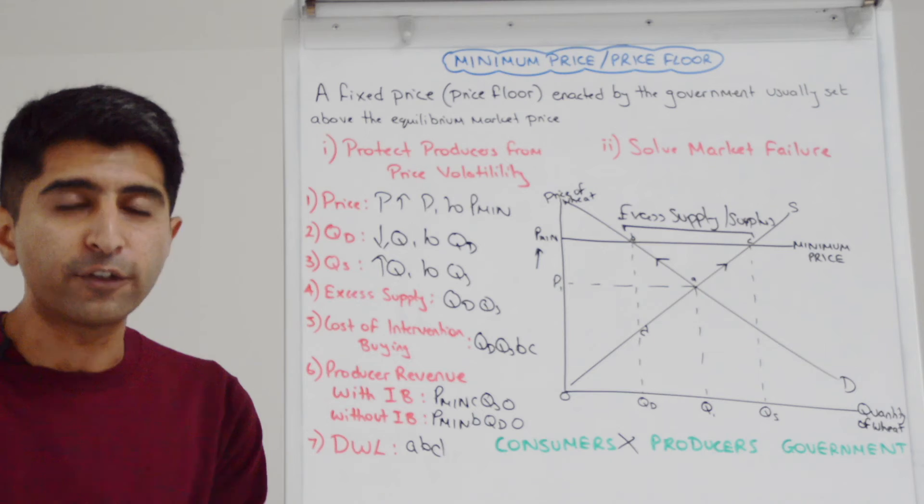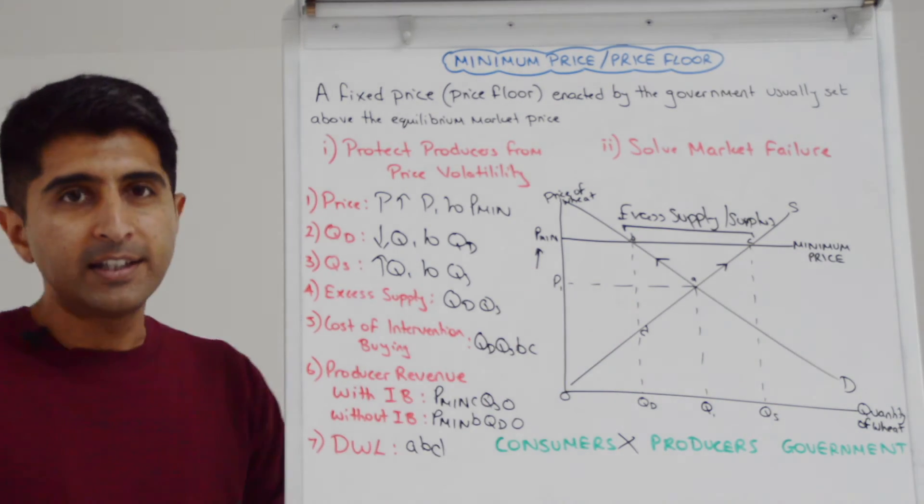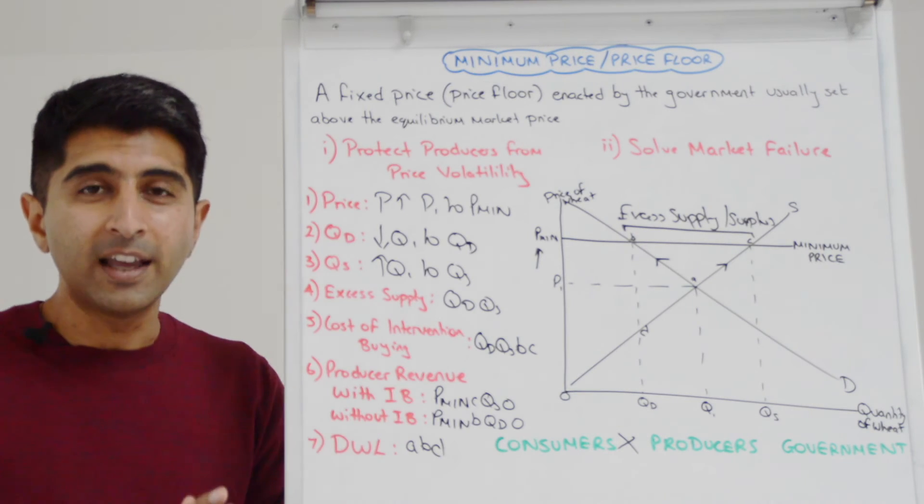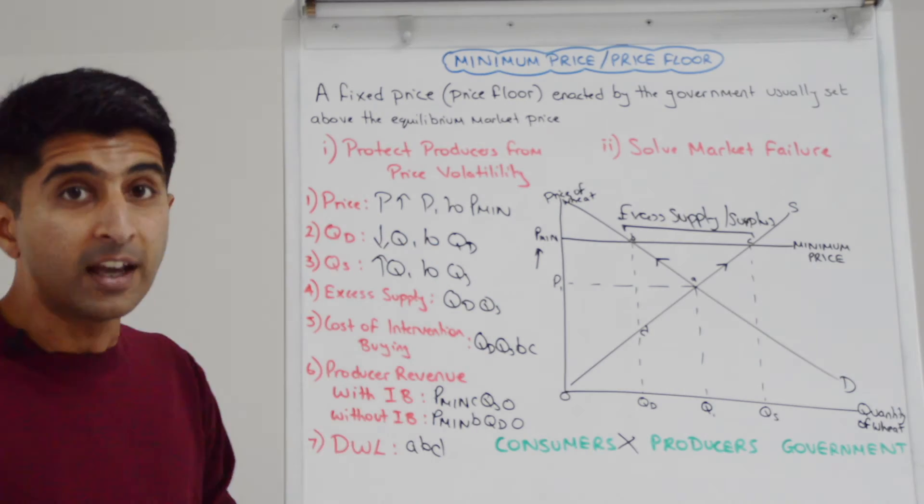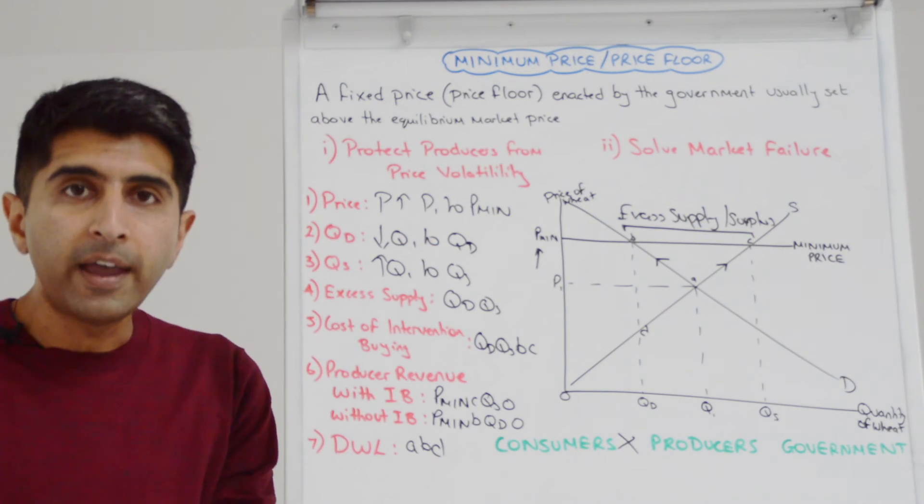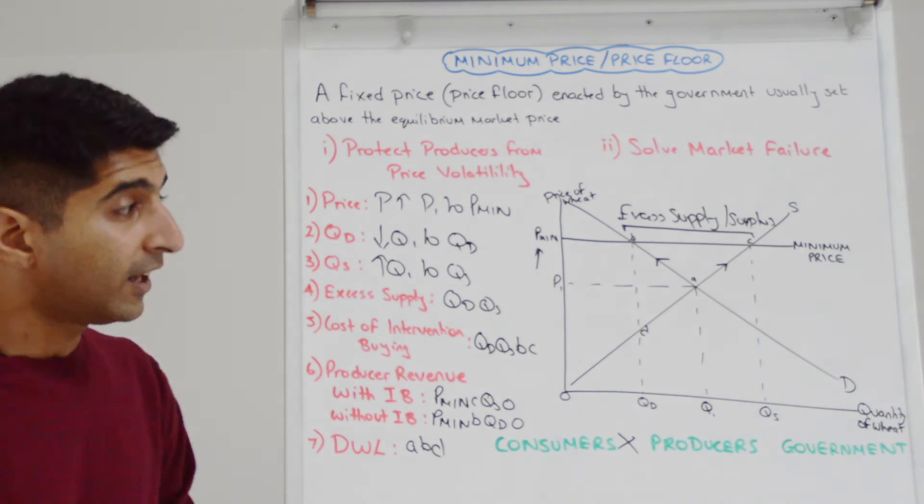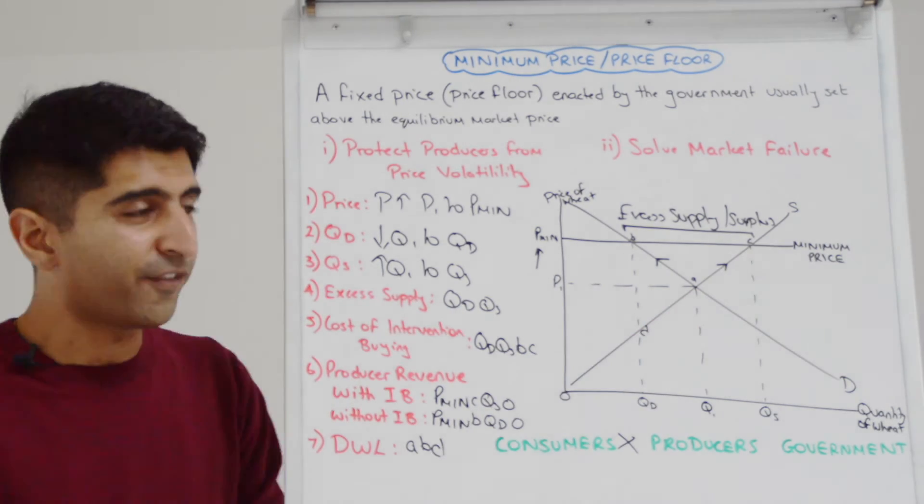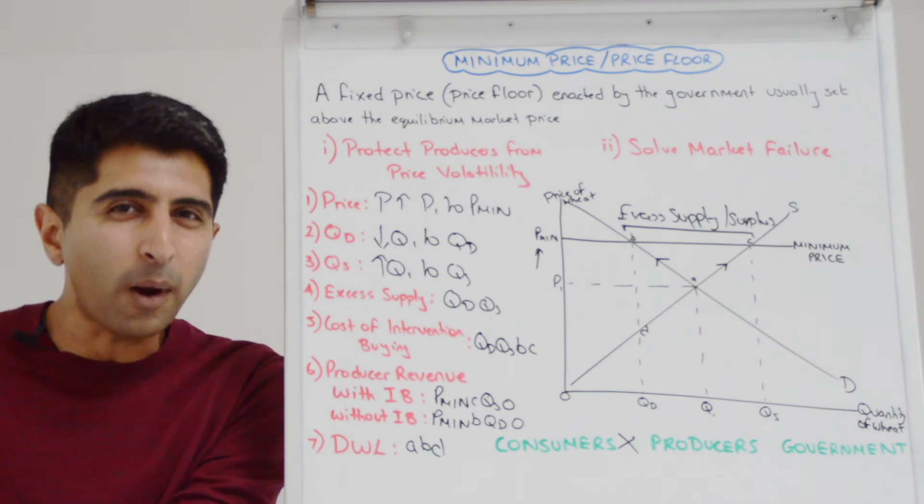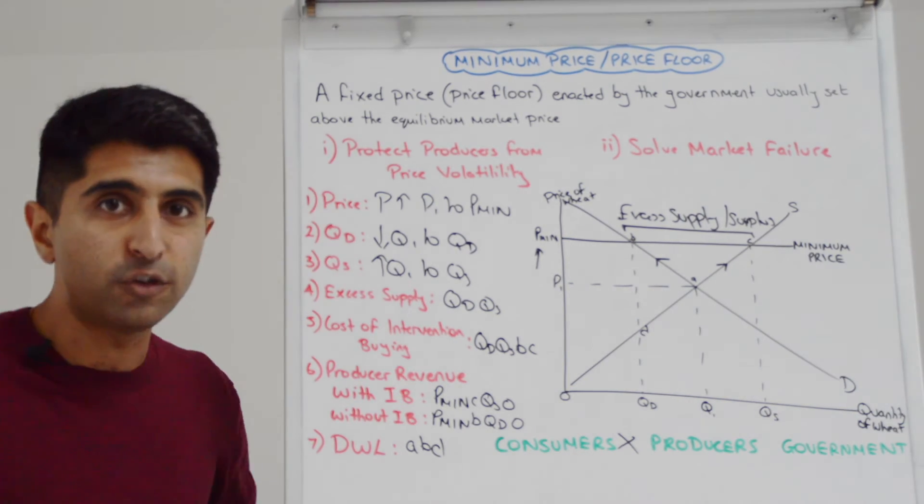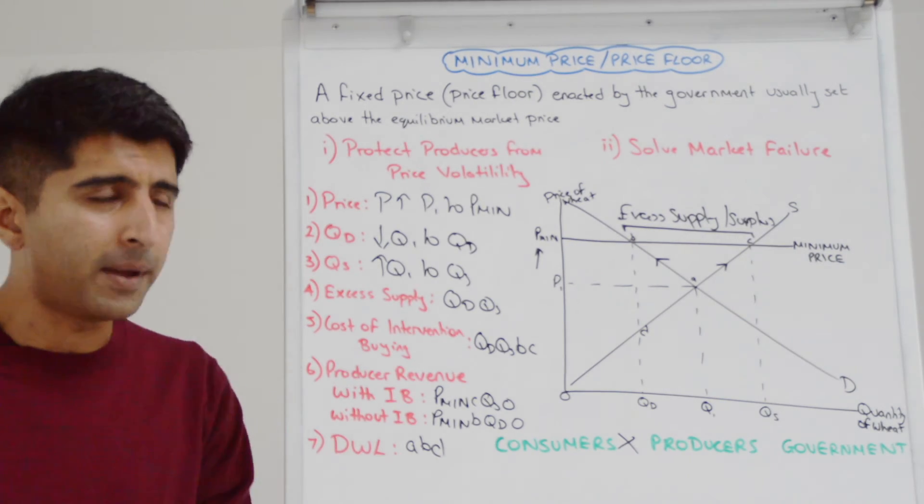But even worse, over time, consumers suffer because they have to bear the cost of intervention buying. Taxes will be higher to fund this. There might be cuts to other areas of government spending in the economy to fund this. The government might be borrowing money and thus paying debt interest on that borrowing, which has a large opportunity cost. And the opportunity cost overall of intervention buying is huge. That money could have been used more productively elsewhere in the economy that could have given consumers a greater benefit. So consumers are suffering in so many different ways.